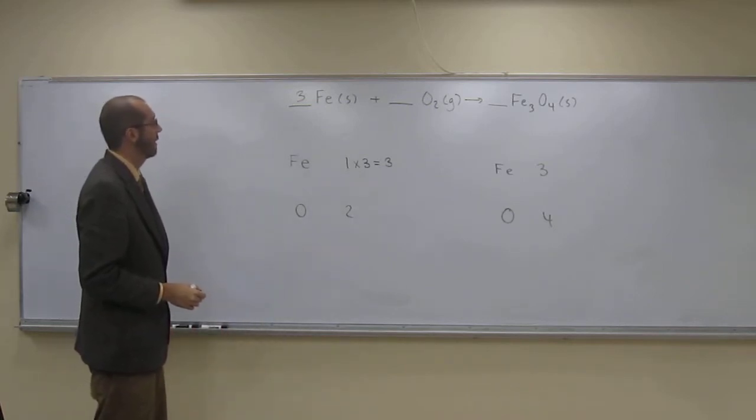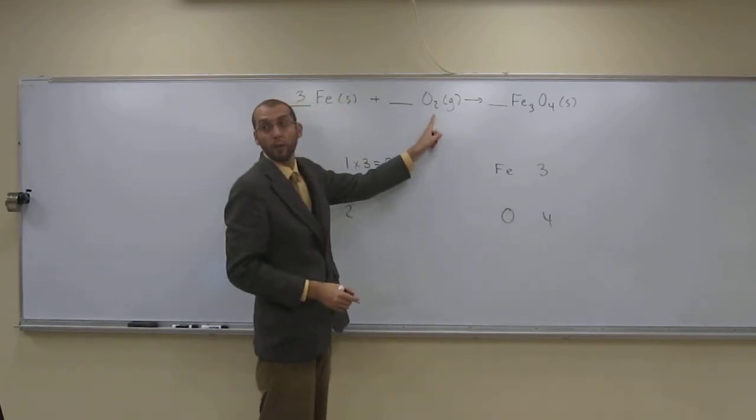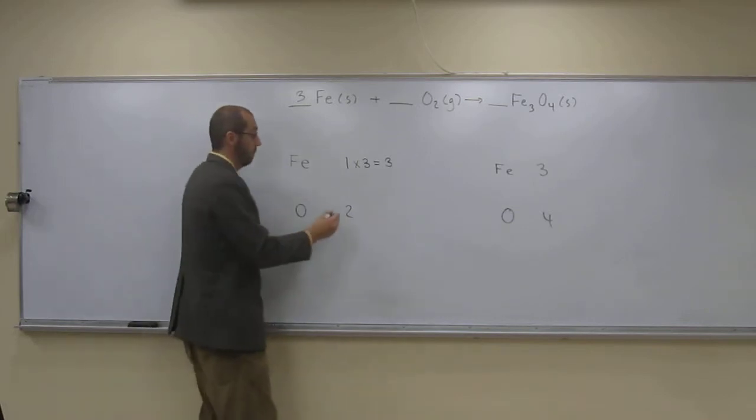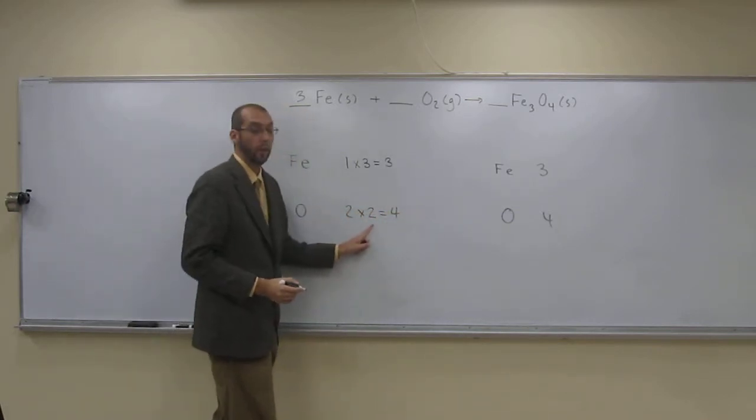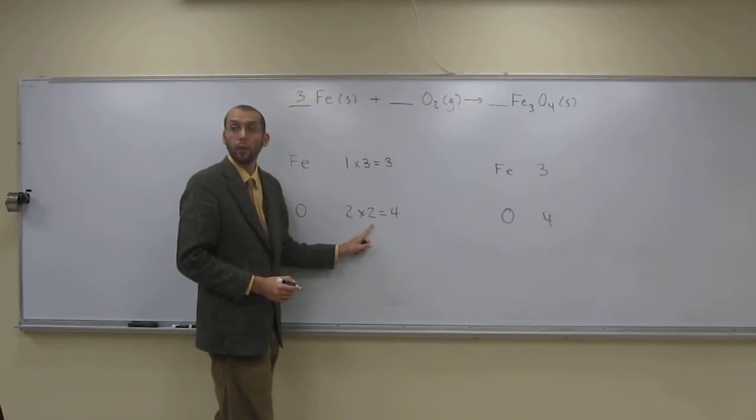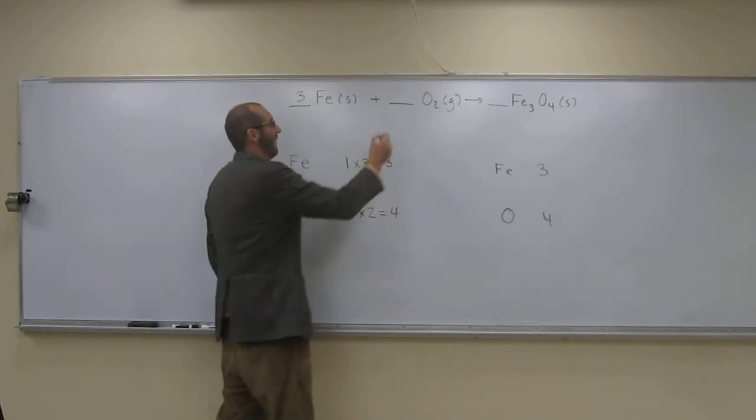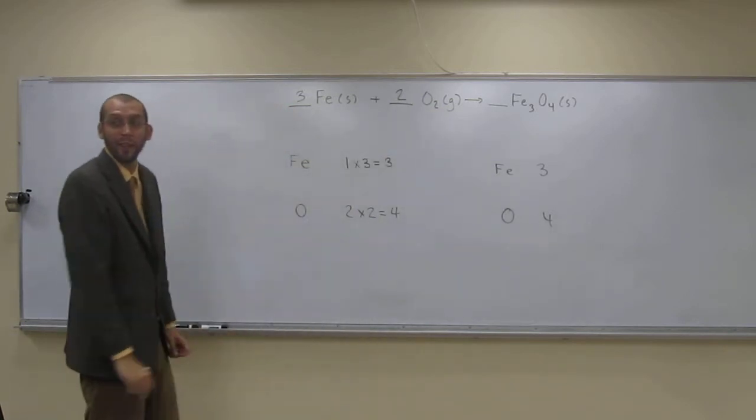And oxygen over here is four, but we have two oxygens here. So, what do we have to do to our two? Multiply it by two, that equals four, and what do we do with that two? Two. Right? Because two times two equals four, okay?